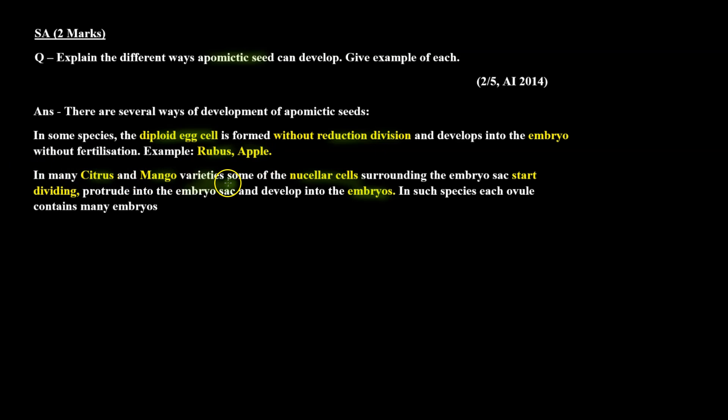In many Citrus and Mango varieties, some of the nucellar cells surrounding the embryo sac start dividing, protrude into the embryo sac, and develop into embryos. In such species, each ovule contains many embryos. I hope this question is clear to you. Thank you.